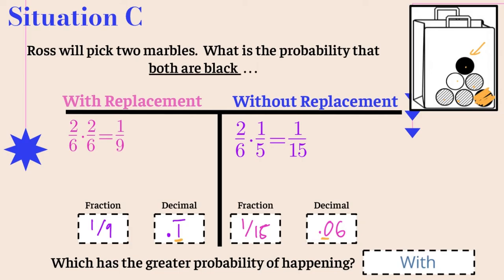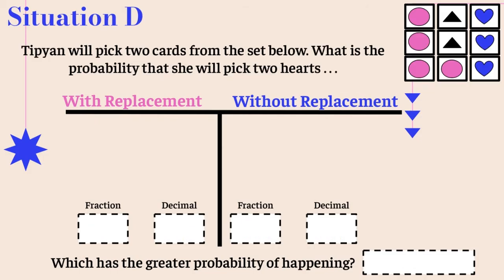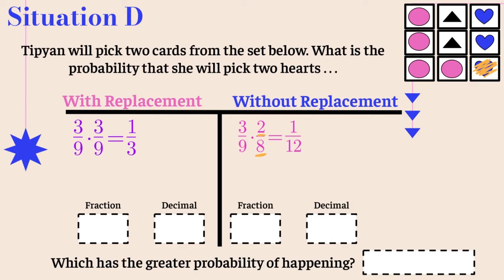Now situation D: Tipian will pick two cards from the set. What is the probability that she picks two hearts? For with replacement, three out of nine are hearts, and replacing gives three out of nine again, reducing to one third. For without replacement, we start with three out of nine, then remove one heart — crossing it out — leaving eight cards total with only two hearts. Three out of nine times two out of eight gives one twelfth.